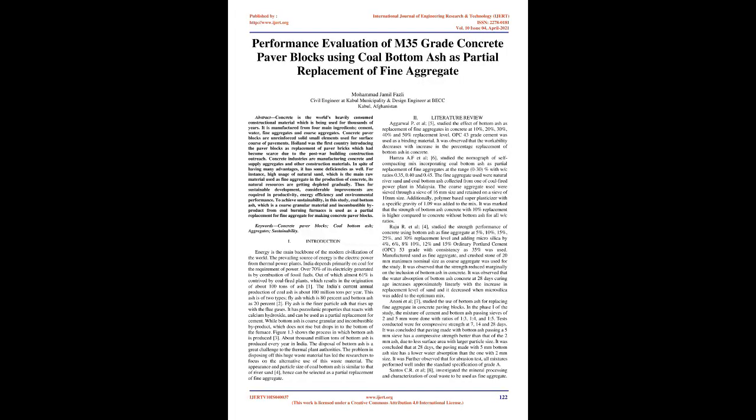Abstract: Concrete is the world's most heavily consumed constructional material, which has been used for thousands of years. It is manufactured from four main ingredients: cement, water, fine aggregates, and coarse aggregates.